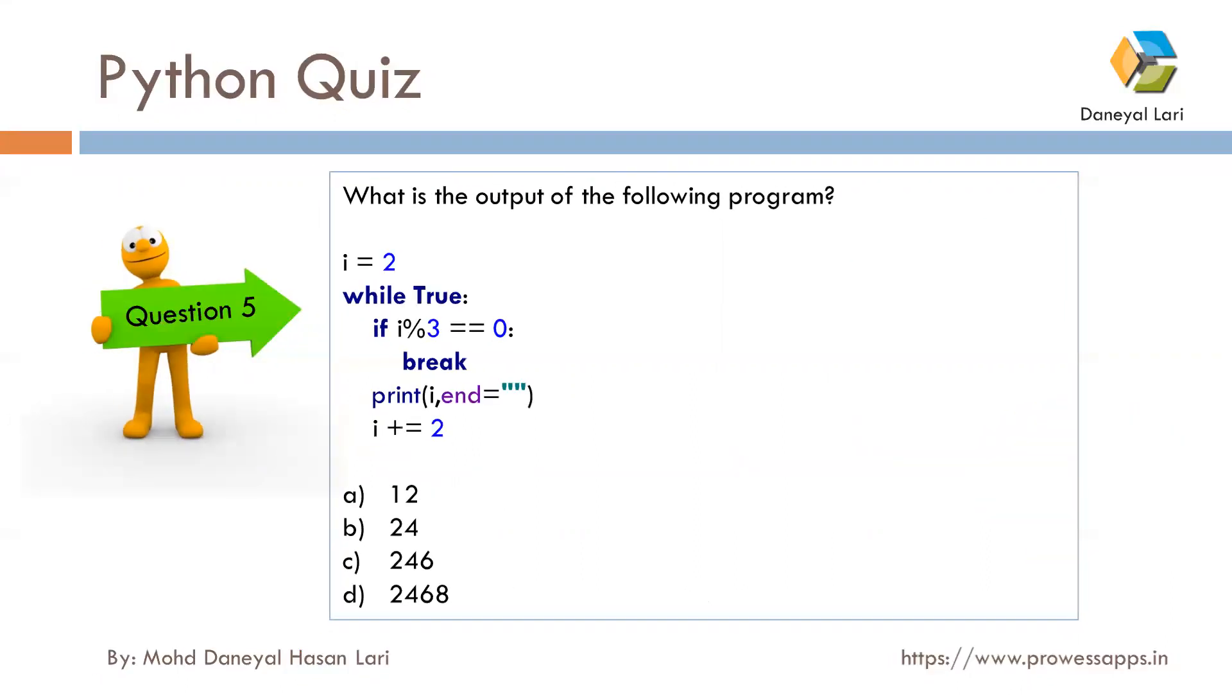Next question was: what is the output of the following program? Here i is initialized with 2. While will execute until it is true. i mod 3 equals 0? No, this condition gets false, so it will print the value of i, which is 2, and it will increase i by 2, so now i becomes 4. Again it checks: i mod 3 equals 0? No, so it prints 4. Now i becomes 6. When it checks again, i mod 3 equals 0, so it will break. The output would be option B: 24.